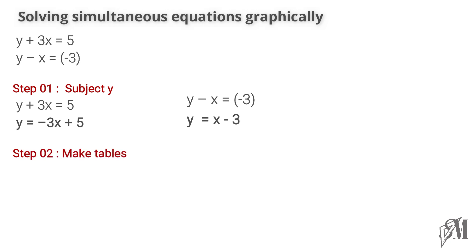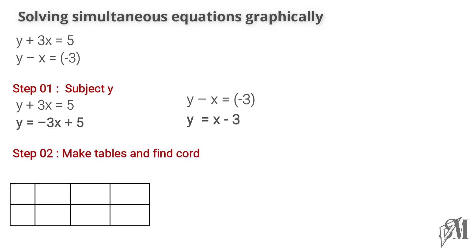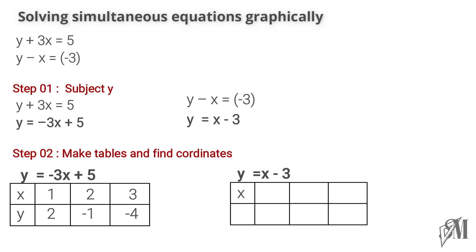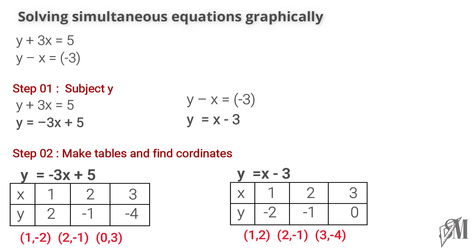Secondly, we make tables to find the coordinates of the two equations. Take values for x from 1 to 3, then substitute the value of x in the equation. When x is equal to 1 and y equals minus 3x plus 5, then y becomes minus 3 plus 5, which is plus 2. Similarly you can fill the tables for both equations and arrange the coordinates from the tables.